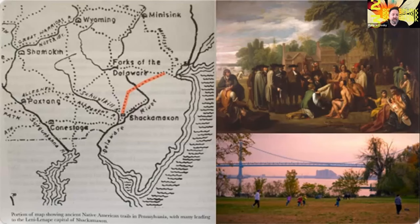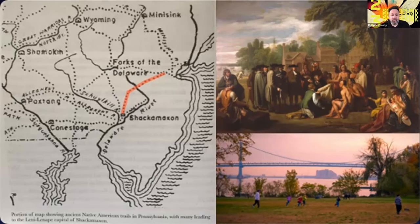Today a park called Penn Treaty Park sits on the site of Shakamaxon, and this park is one of the main green spaces in my neighborhood of Fishtown in Philadelphia. The trail highlighted in red here developed into what is today known as Frankford Avenue, one of the main commercial corridors through my neighborhood.